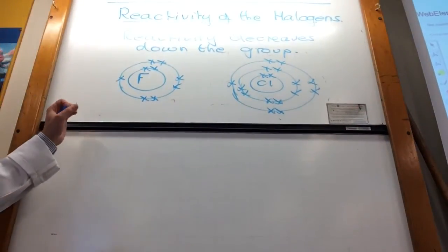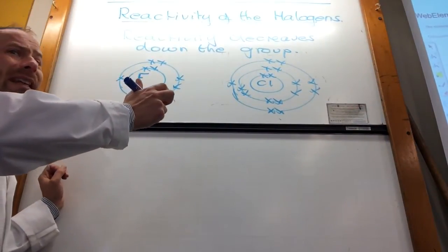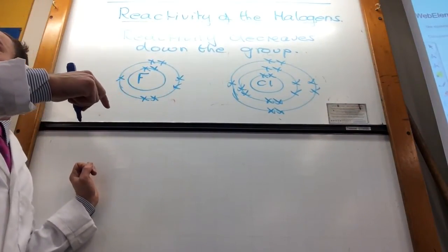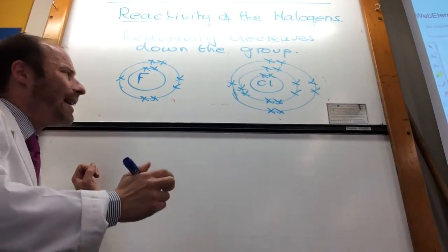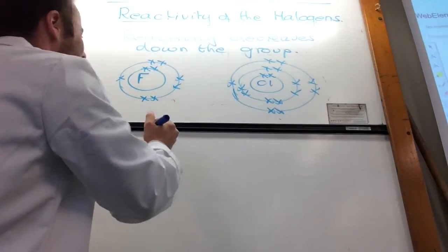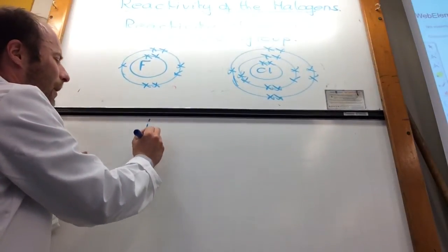What's happening? For each of these, what do they want to do? They all want to get eight electrons. They all want to gain an electron. What type of ion are they going to become?